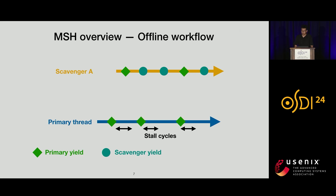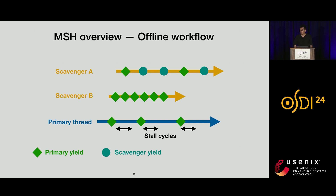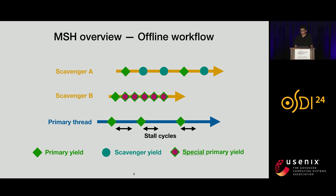To fix this, we instrument the scavenger with what we call scavenger yields. These ensure the inter-yield distance between consecutive yields is bounded to a user-specified configurable distance, making the latency overhead added to the primary small and configurable. Moreover, when primary yields are too close to each other in the scavenger, the scavenger quickly returns control to the primary, resulting in insufficient harvesting. To address this, we mark those primary yields as special primary yields that instead of directly yielding back to the primary, yield to the next scavenger if available. This allows on-demand concurrency scaling to fully harvest memory stall cycles.